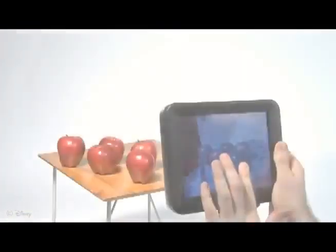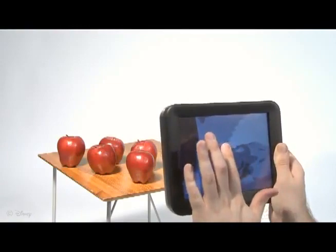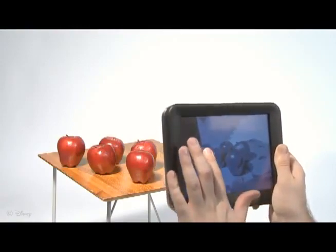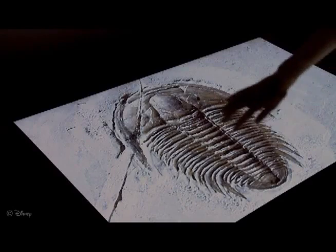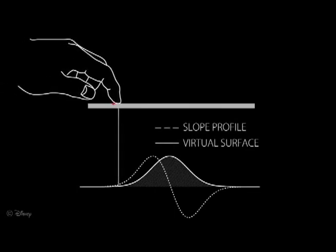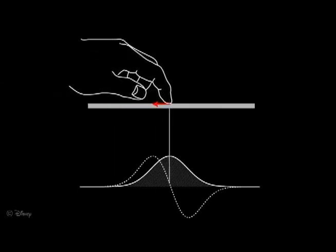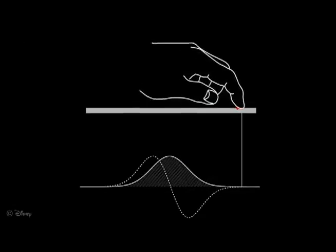We present a novel tactile rendering algorithm for simulating three-dimensional geometric features on flat touchscreen surfaces. This includes generating ridges, edges, protrusions, bumps, and any combination of these textures. Our algorithm maps the frictional forces between the screen and the user's finger to the slope of the desired virtual surface, creating a realistic tactile sensation.